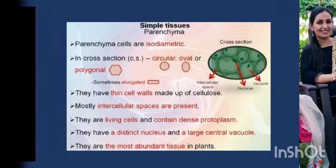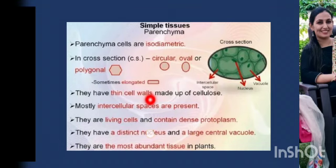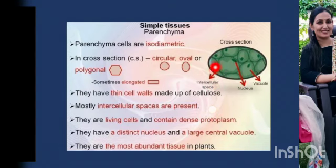Parenchyma basically forms the basic packing tissue of the plant body, present in large amounts between the specialized tissues. The word parenchyma comes from the Greek, where 'para' means beside and 'enchyma' means to pour. The cells of parenchyma tissue are isodiametric — in cross section they may be circular, oval, polygonal, or sometimes elongated. Generally the cells have thin walls made up of cellulose or calcium pectate, and intercellular spaces are present between the cells.